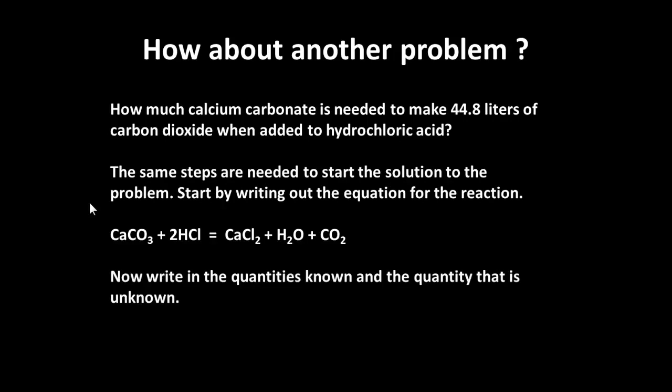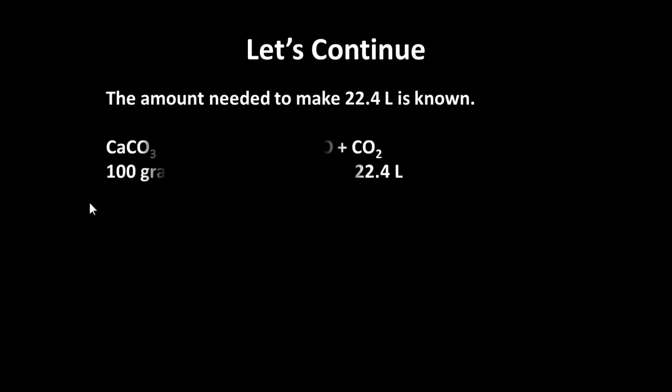We write out the equation, then write in the known quantity and the unknown quantity. The known quantity is the 44.8 liters of carbon dioxide that we want, and the unknown quantity is the x grams of calcium carbonate. The amount to make 22.4 liters: from the equation, 100 grams of calcium carbonate — that's its molecular mass — gives 22.4 liters of carbon dioxide.